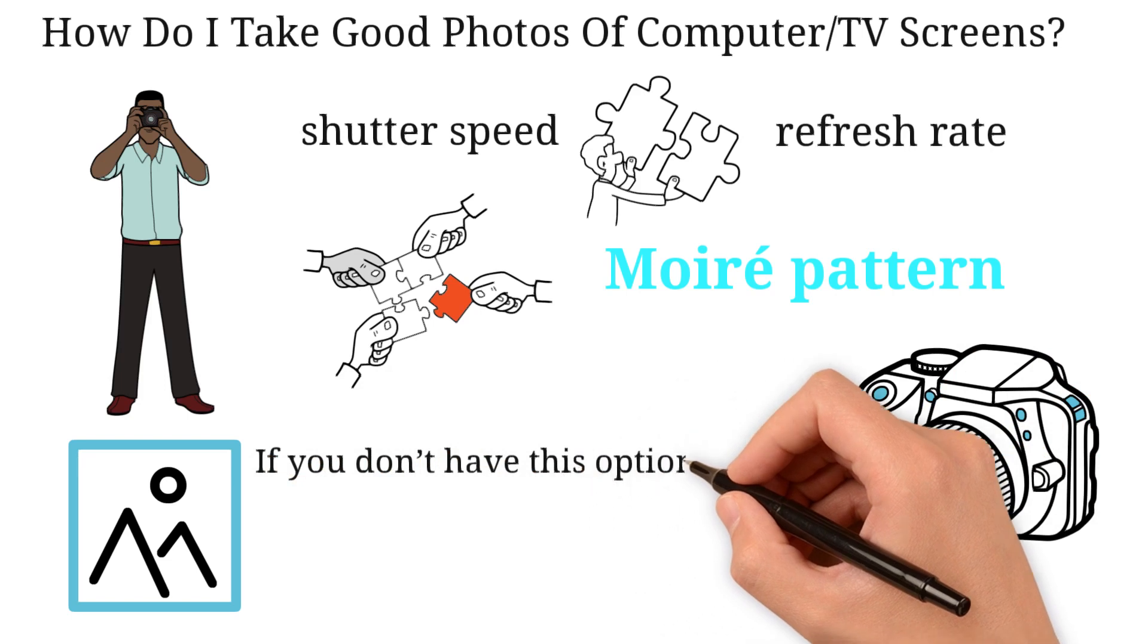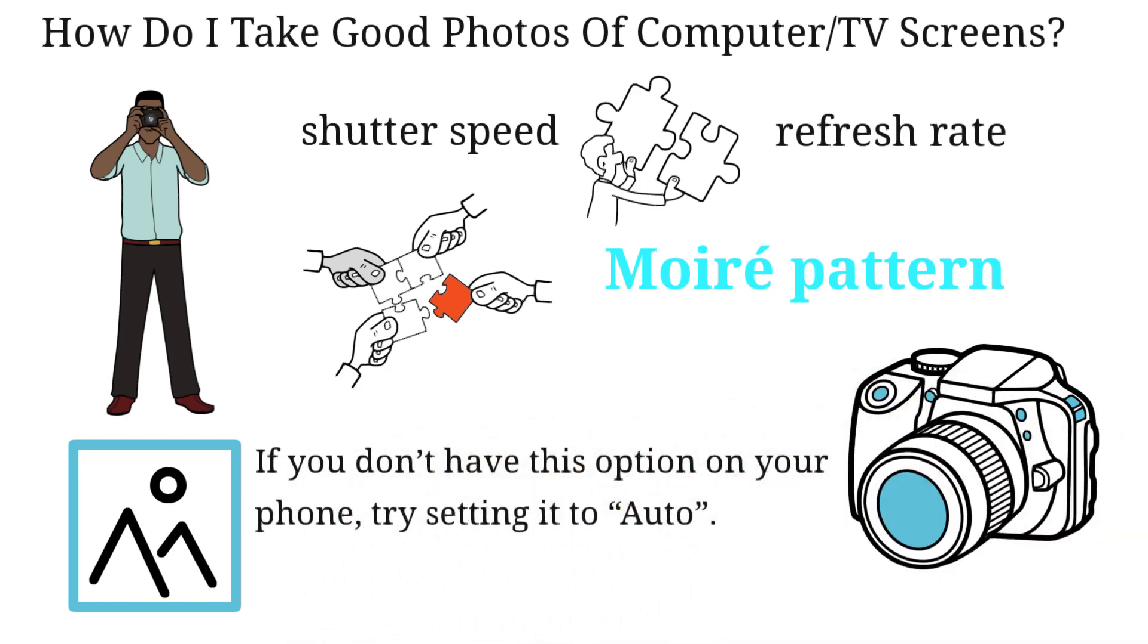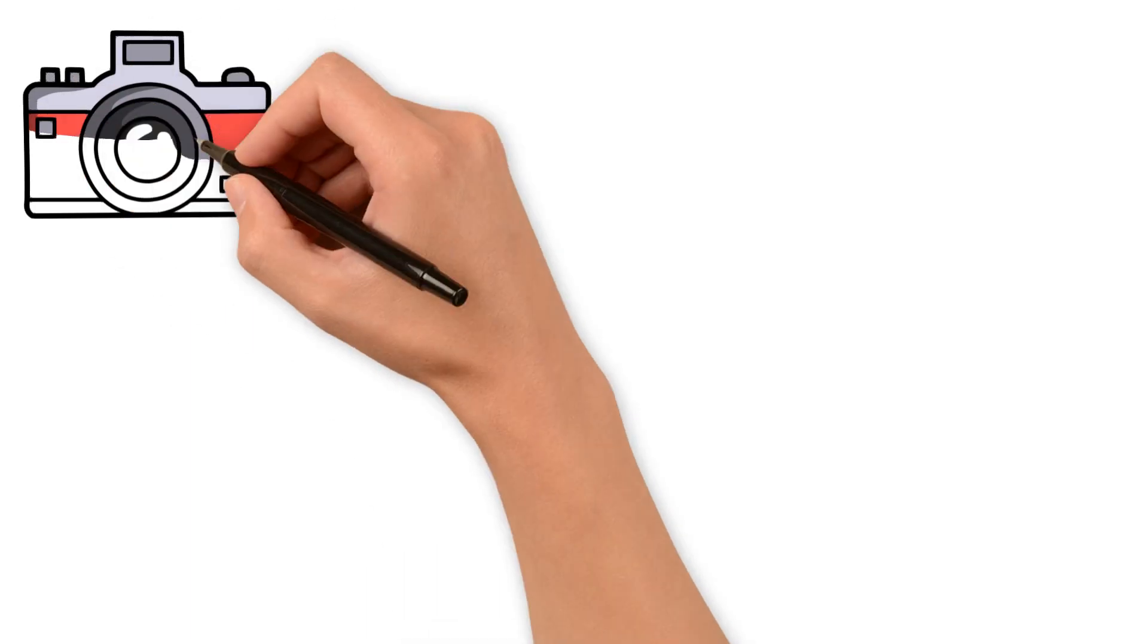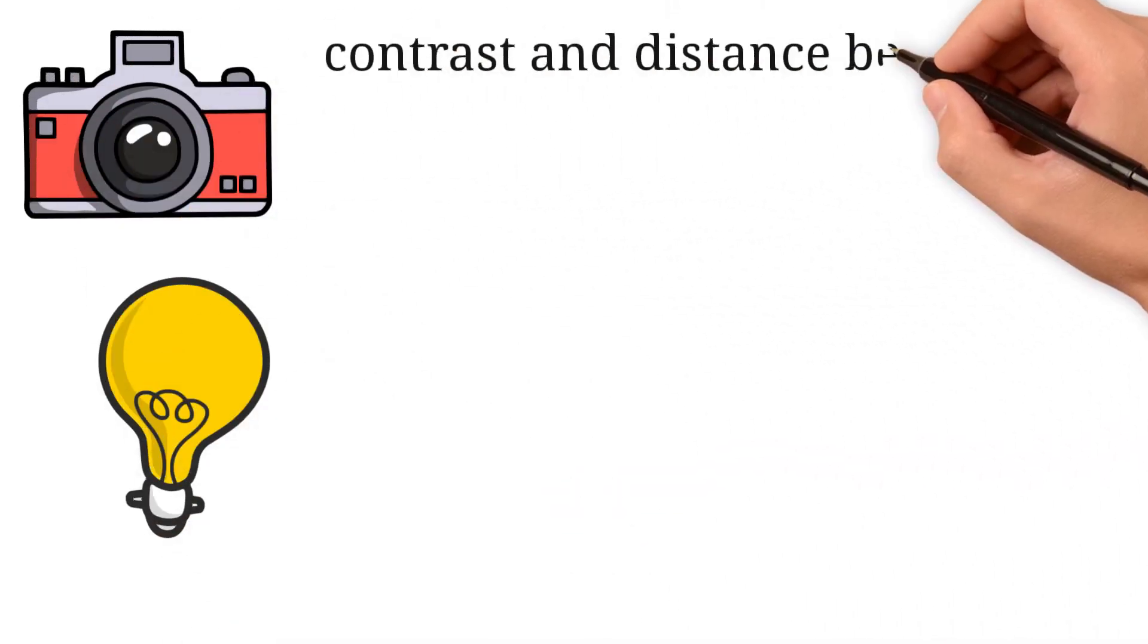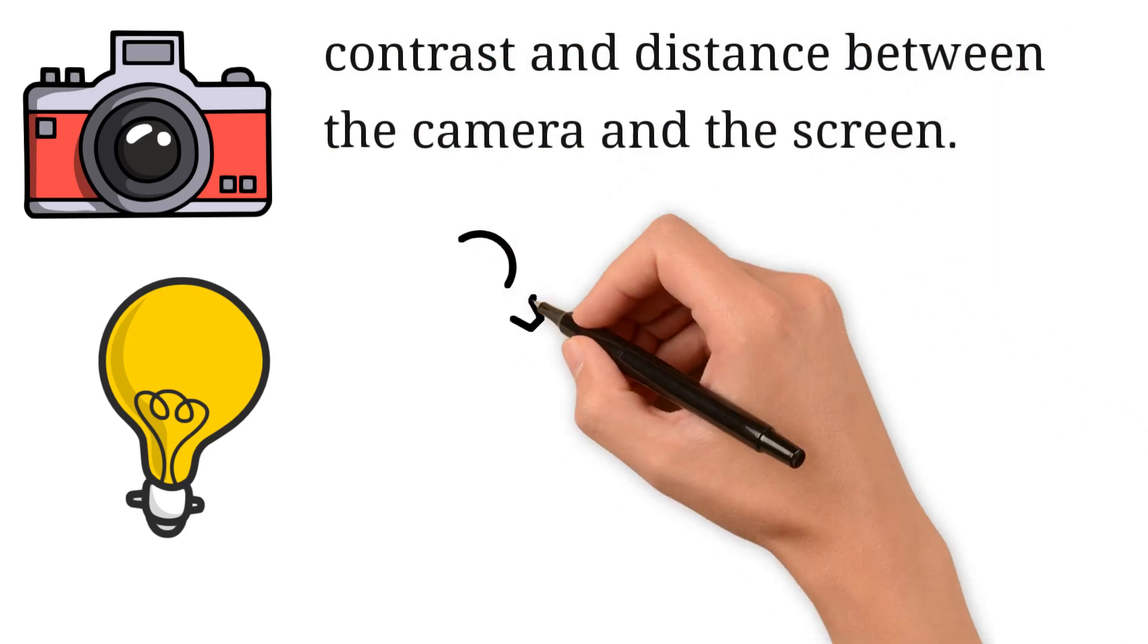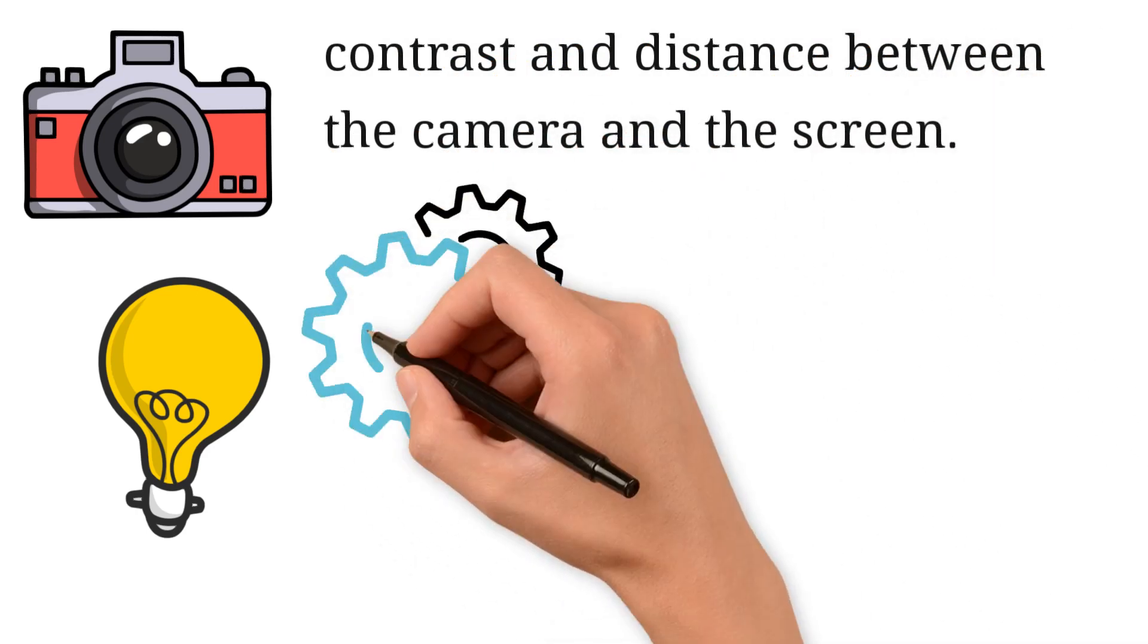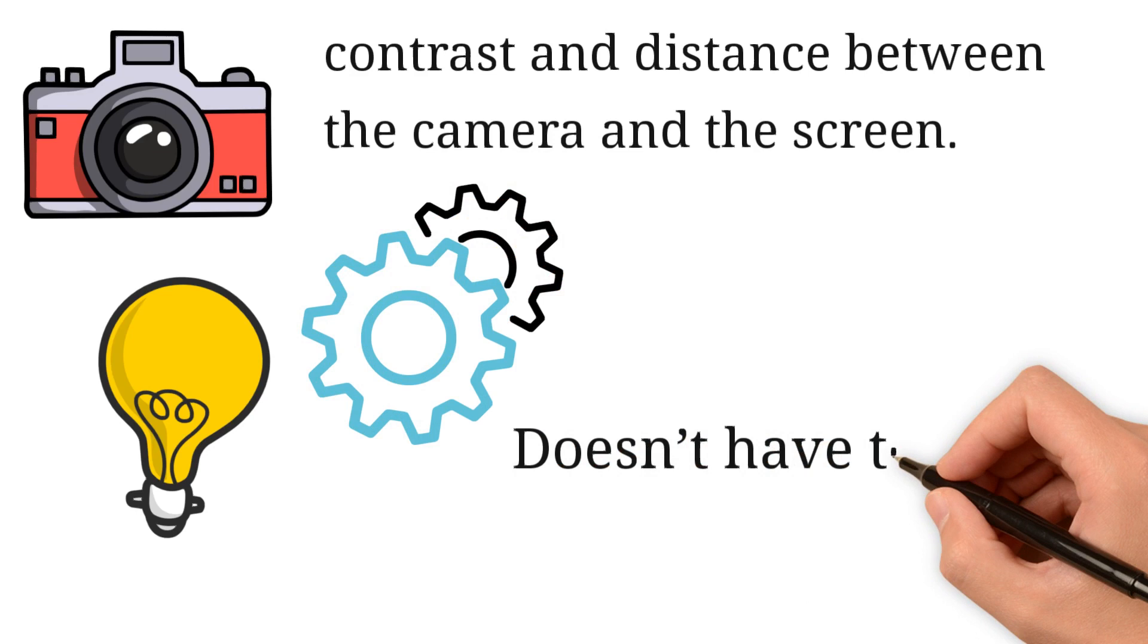If you don't have this option on your phone, try setting it to auto. If your camera doesn't have that setting, to reduce the moiré pattern, you can try adjusting the brightness, contrast, and distance between the camera and the screen. You can play around with them until you find an angle that doesn't have too many noticeable dark spots.